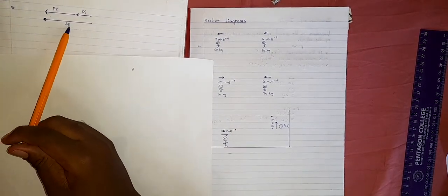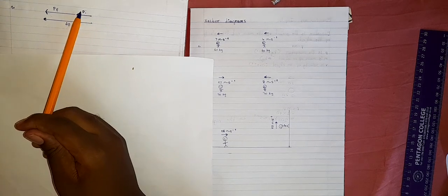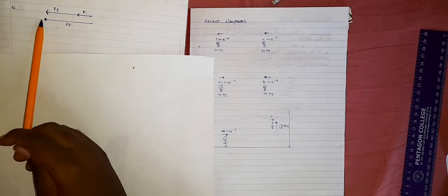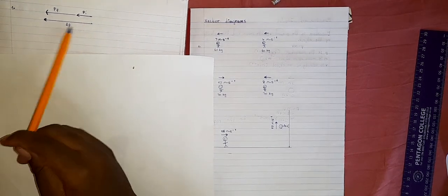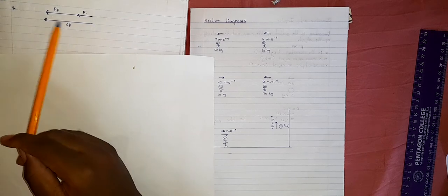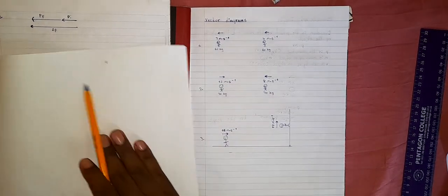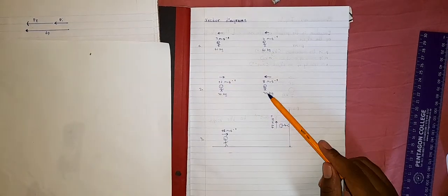The change in momentum equals the final momentum minus the initial momentum. Make sure you use a ruler to ensure that the arrows are properly aligned. The initial momentum, the final momentum, and the change in momentum will all be to the left. Now let's look at scenario number two.